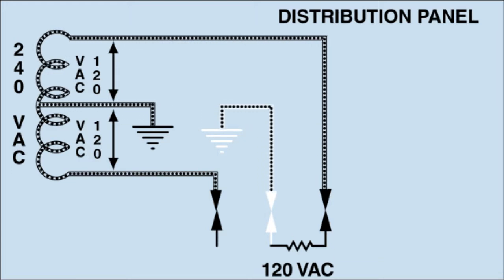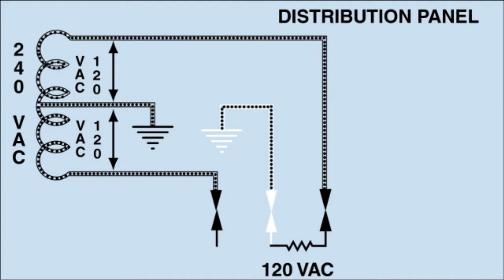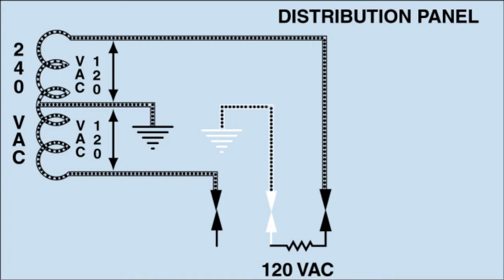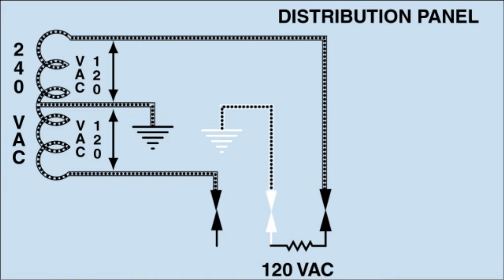All 120-volt loads will connect to only one bus bar in the panel. While you're looking at this, note that the circuit is completed through the neutral wire from the panel to the top half of the pole transformer secondary.